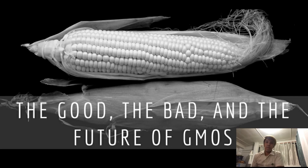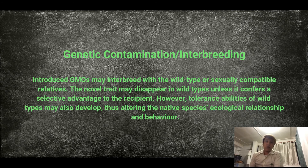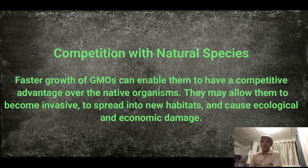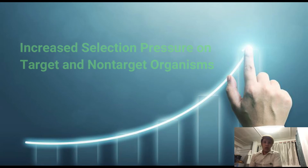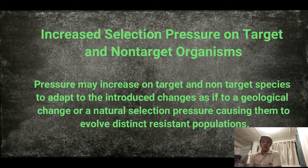Here are five types of risk and implications of GMO for future impact. First, genetic contamination and interbreeding: introduced GMOs may interbreed with wild types or sexually compatible relatives, and tolerant abilities of wild types may develop, altering native species' ecological relationships and behavior. Second, competition with natural species: faster growth of GMOs can give them a competitive advantage over native organisms, potentially making them invasive and causing ecological and economic damage. Third, increased selection pressure on target and non-target organisms: pressure may cause distinct resistance populations to evolve.